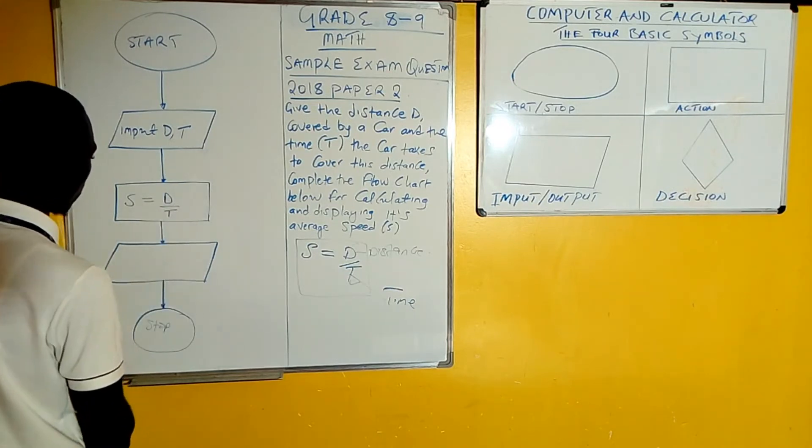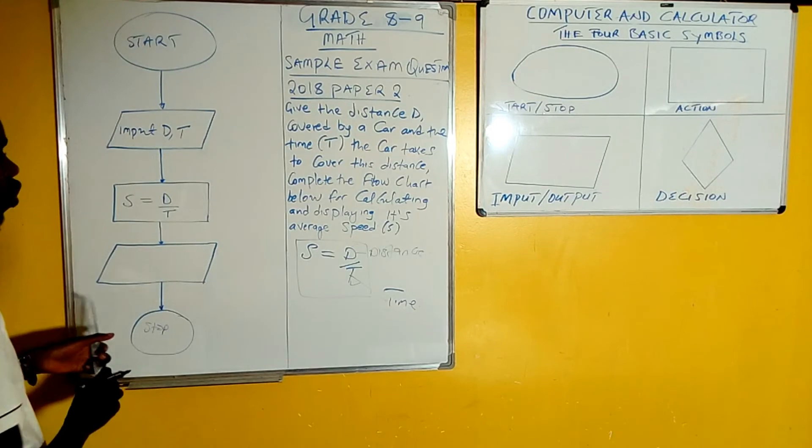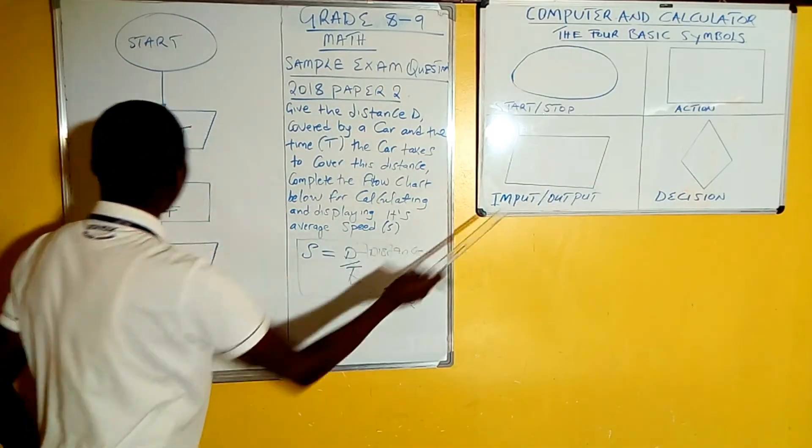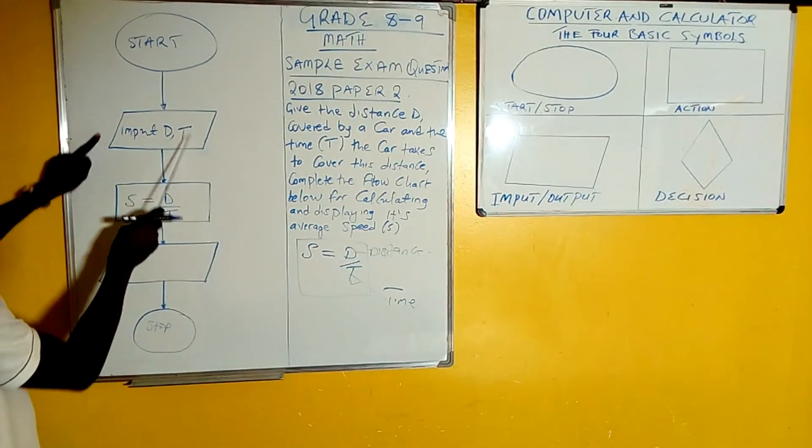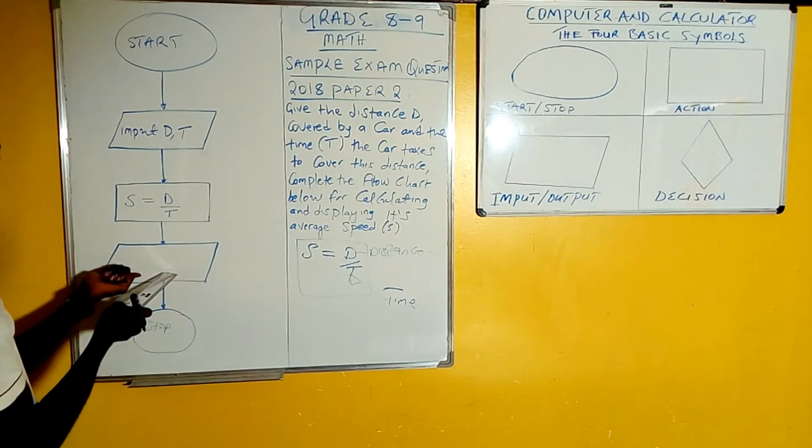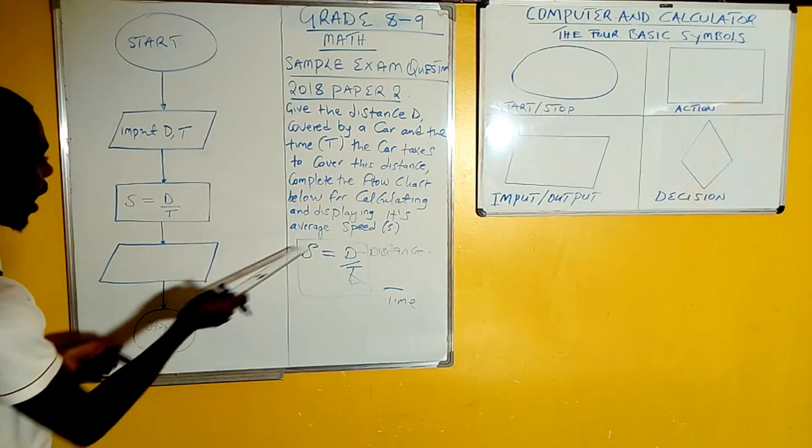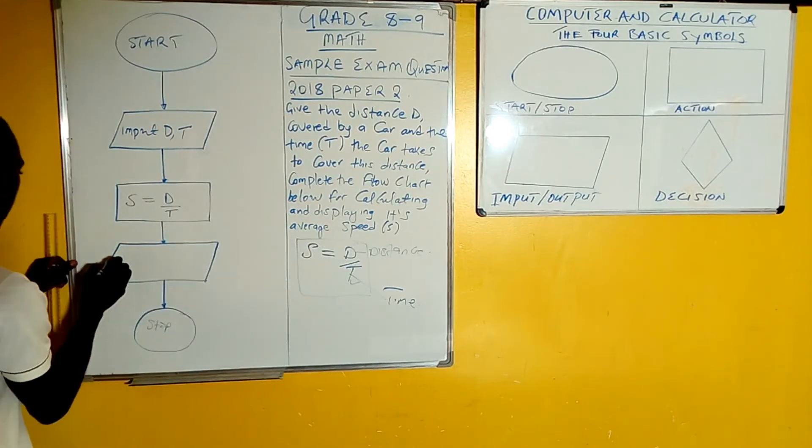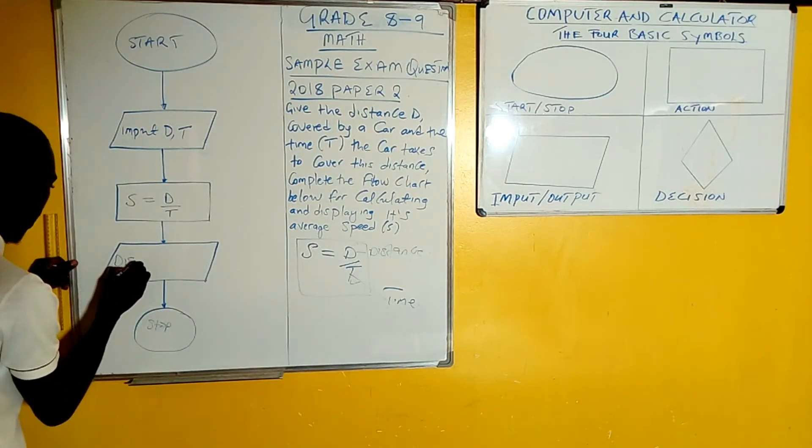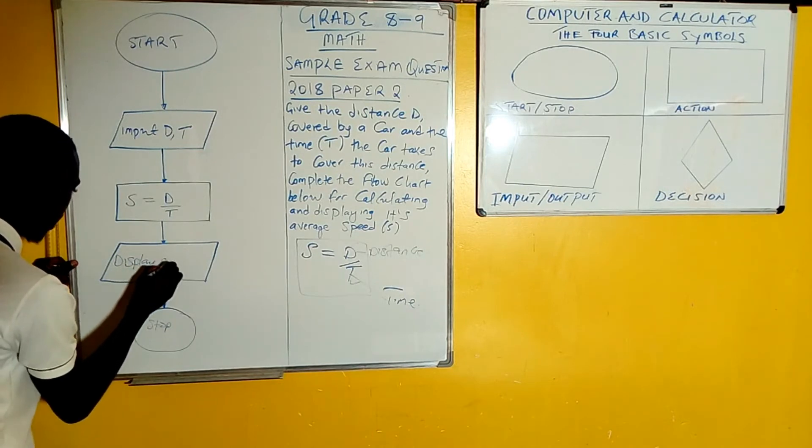This one means two things: inputs and output. For the input, we've already filled that in. Now we are going to do the output, which is here. What are we outputting? We are outputting the average speed. So here we simply write: display speed. That is how it is done.